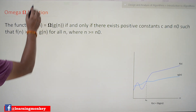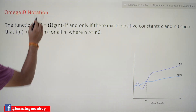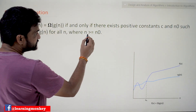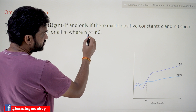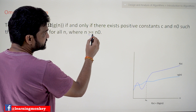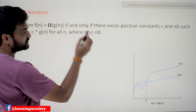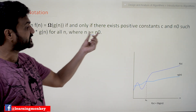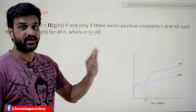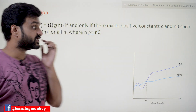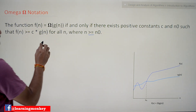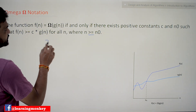One more point to note: in the previous class we forgot to mention it, but for Big O notation also, the condition is n greater than or equal to n-naught. Please make a note of this point.